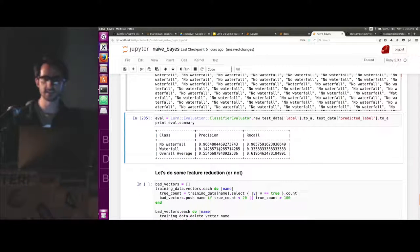So that means that given that our classifier predicted waterfall, it actually only contains a waterfall about 14% of the time. So not great.